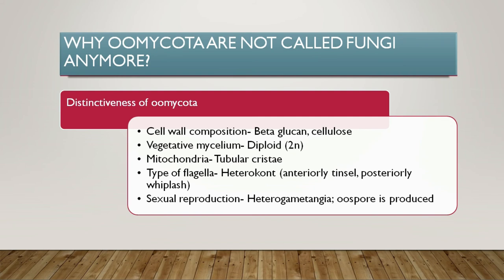Though Oomycota share some characteristics with true fungi, they are not true fungi because of differences at the molecular and biochemical level. The Oomycota organisms have different cell wall composition — Oomycota have beta-glucan and cellulose in their cell wall, whereas true fungi have chitin in their cell wall.